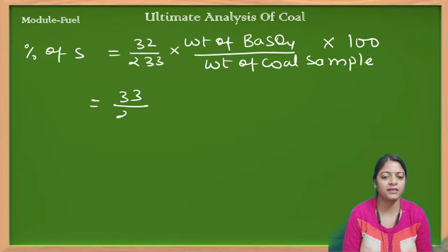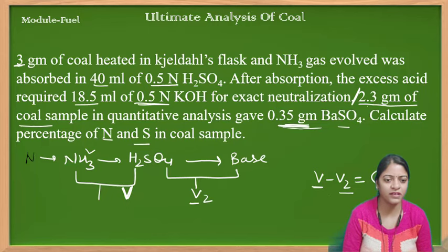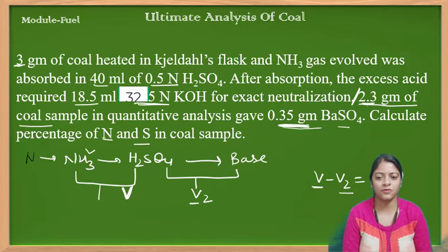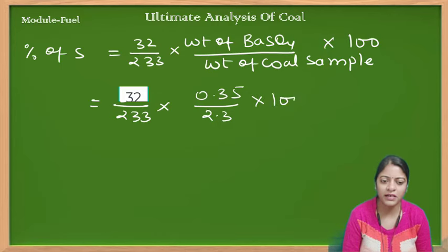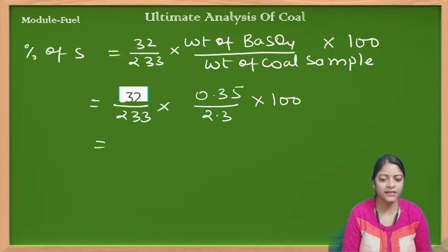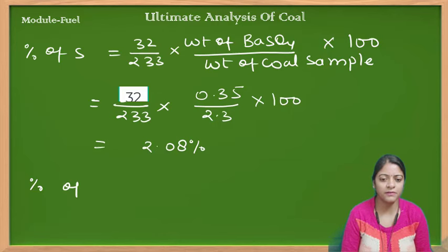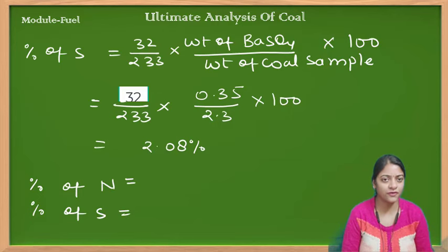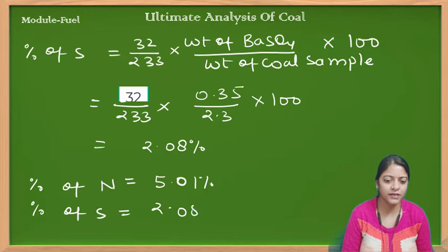तो यहाँ पर अगर हम values put कर दें — हमें barium sulfate मिला है 0.35 gram और coal है 2.3 gram। So: (32/233) × (0.35/2.3) × 100 = 2.08%। So percentage of sulfur is 2.08%।